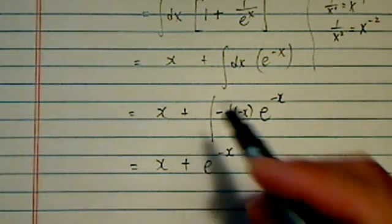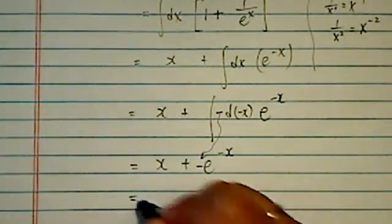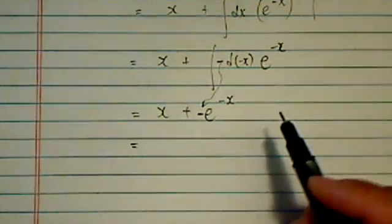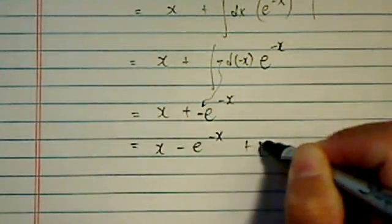So here I have, oh here, I missed the minus sign. This minus sign should have moved down here. So our final answer here should be, let's put that minus sign into X, minus E to the minus X plus a constant.